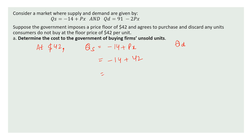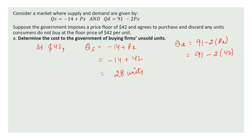QS = -14 + PX. Putting PX = 42: QS = 42 minus 14 = 28 units. So firms supply 28 units. Now looking at demand: QD = 91 minus 2 into PX. With PX = 42, that is 91 minus 84 = 7 units.